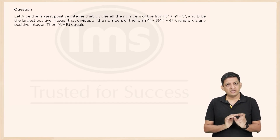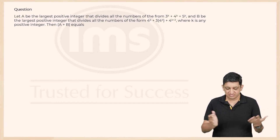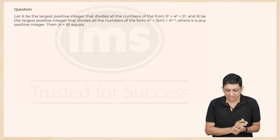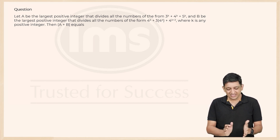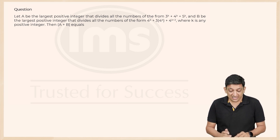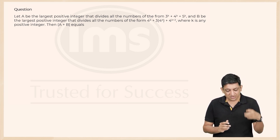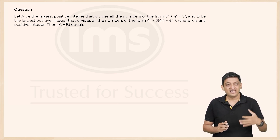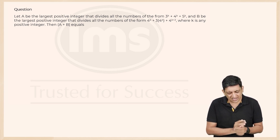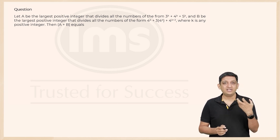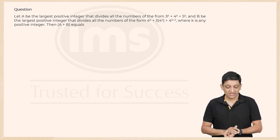This was a rather interesting question because a lot of people might have gotten sort of disillusioned by that 3 raised to k, 4 raised to k, 5 raised to k and so on. But it is a fairly straightforward question. In these kinds of questions, whenever you have been asked which of these numbers divides, or what is the remainder when something is divided by something, you can take values and figure out if there is some element that is common.